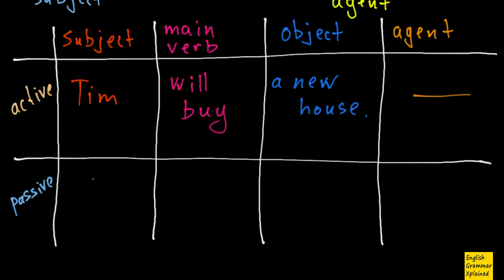But if I want to make passive, I do this. A new house from here is placed here, and this is my new subject, this is it. The main character of my sentence if you will. Then I change my main verb. Will be bought.